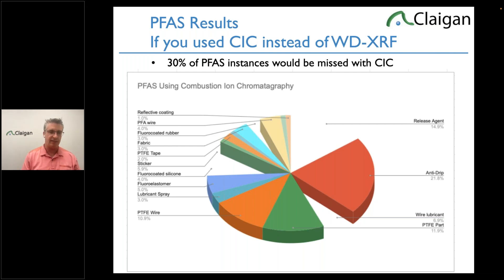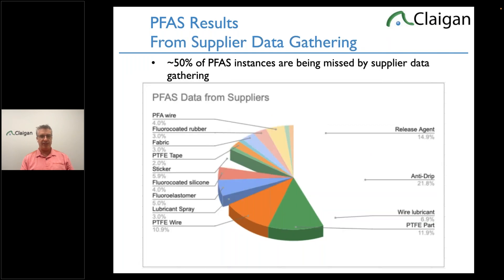If you do supplier data gathering, a lot of things like anti-drip agents go without declaration. Supplier data gathering causes you to miss about half the instances. If you're using that as your basis for compliance, you better hope nobody enforces it — especially for PFOA, because it's wrong. And PFOA is a stop-ship ban.